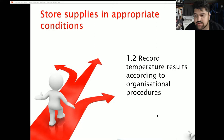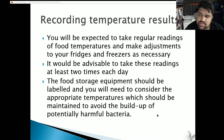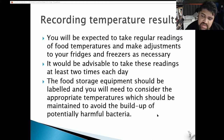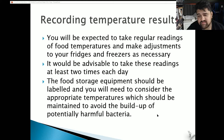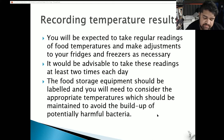1.2: Record temperature results according to organizational procedures. You will be expected to take regular readings of food temperatures and make adjustments to your fridges and freezers as necessary — at least twice each day. Food storage equipment should be labelled and you need to consider appropriate temperatures to avoid harmful bacteria build-up. For hot food, keep it above 60 degrees (ideally above 78). For chilled food in the fridge, below 5 degrees Celsius. For frozen food, below negative 18 degrees.